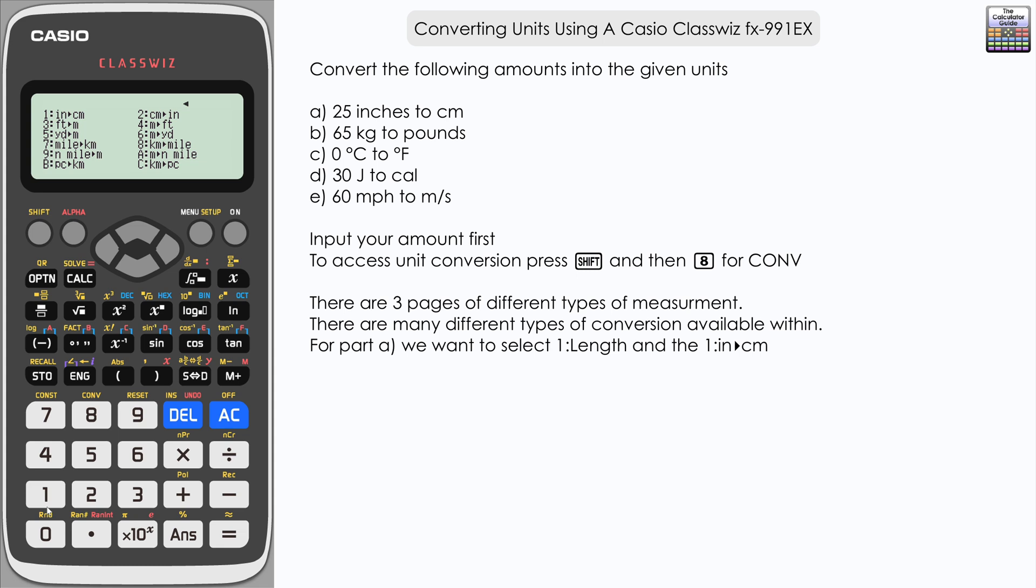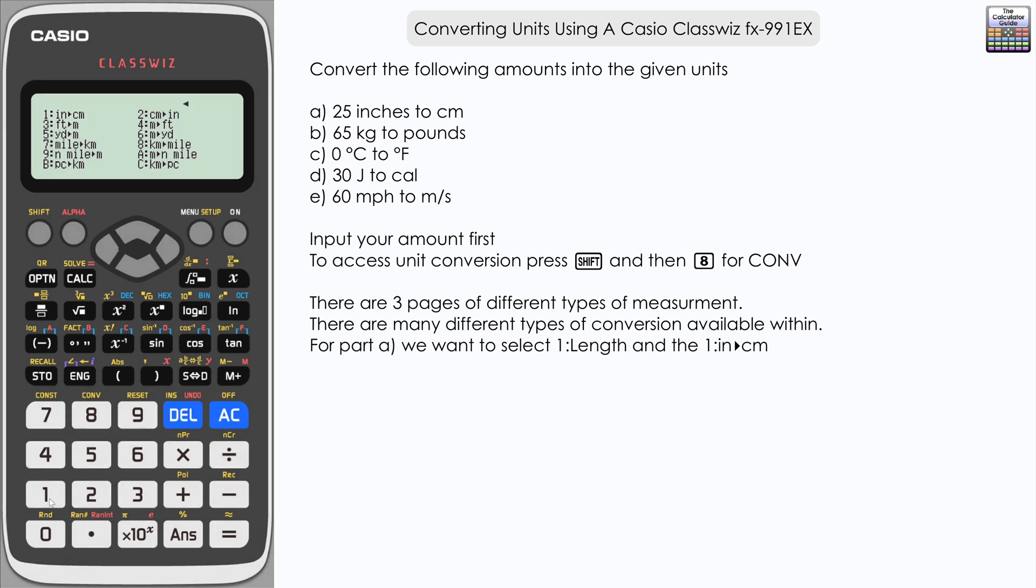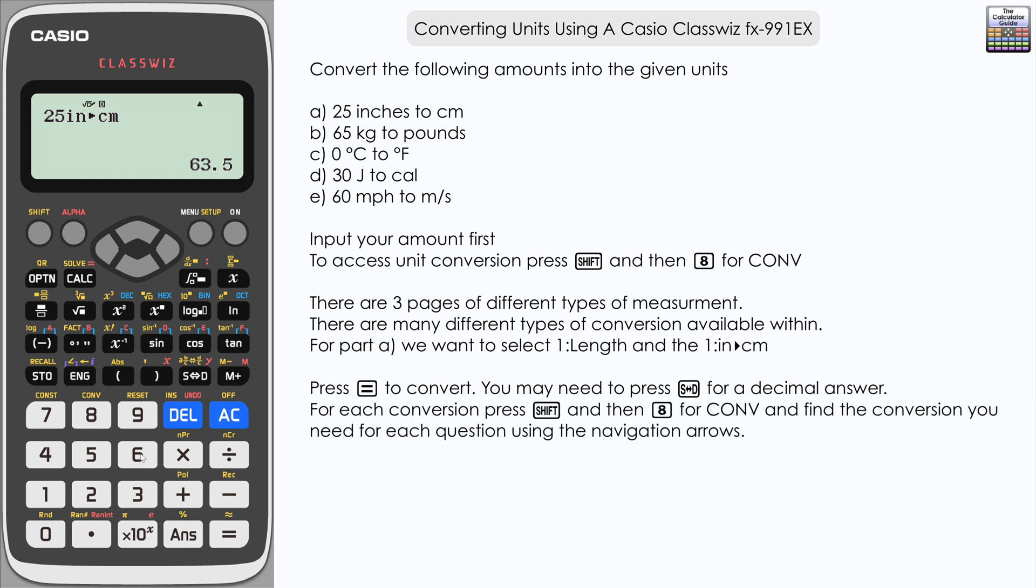But in this one we're going to choose option 1 here which is inches to centimeters. You can see that displayed there, 25 inches to centimeters, press equals. We've got a fraction, let's just change that to decimal, SD, 63.5 centimeters.